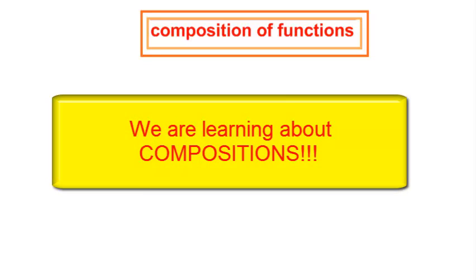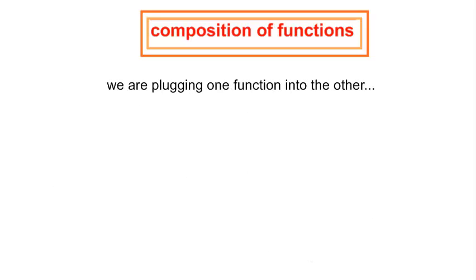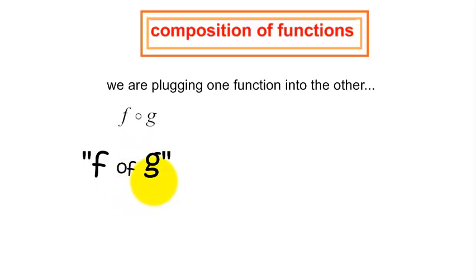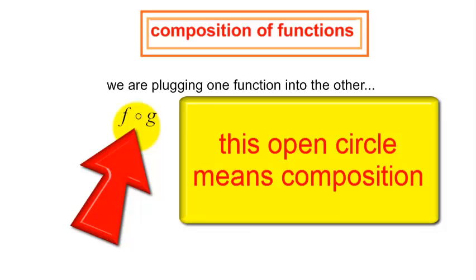Composition is when we plug one function into another. If I say find f at g, sometimes people call it f of g. You see this little open circle — that does not mean multiplying. That means composition.